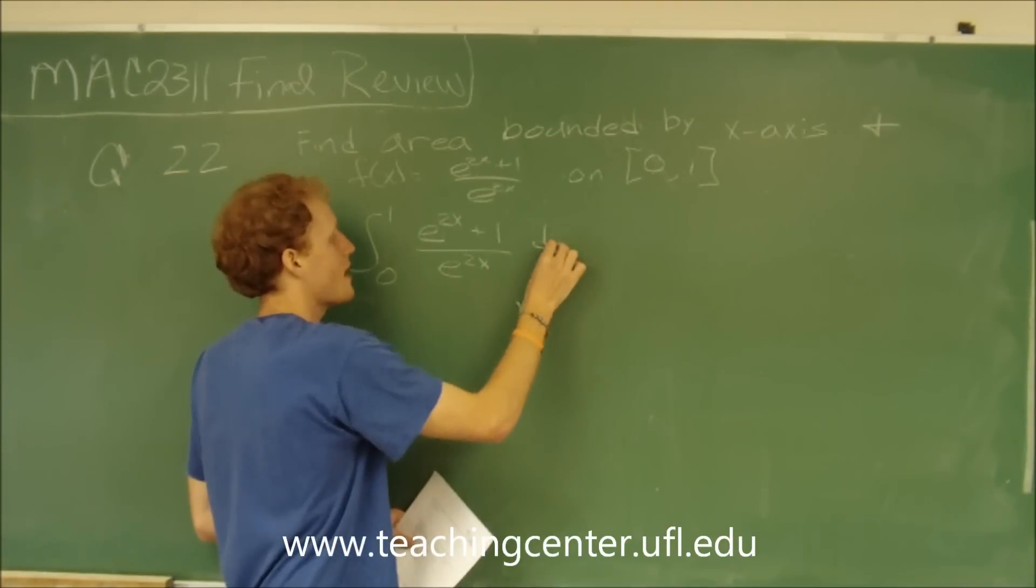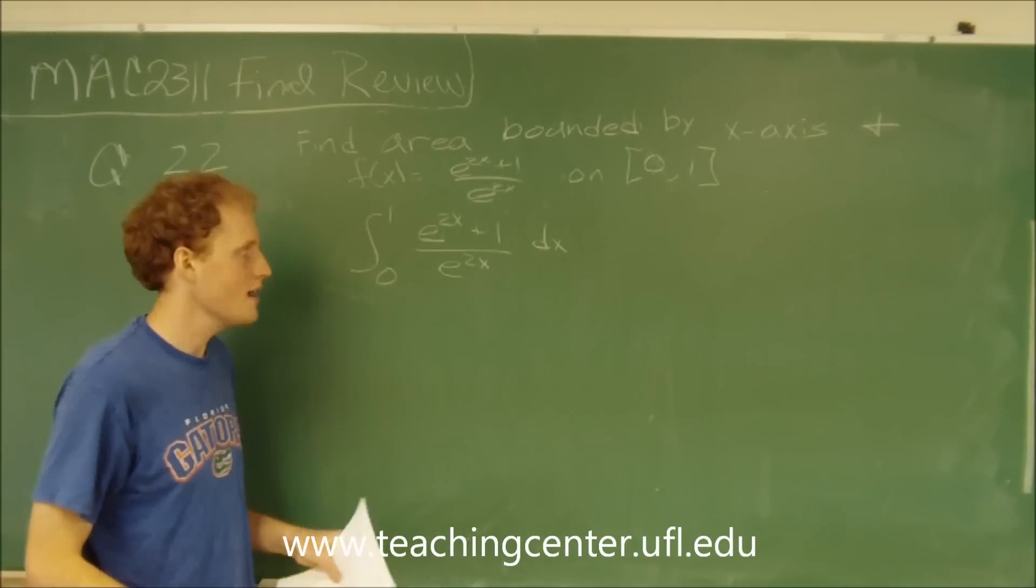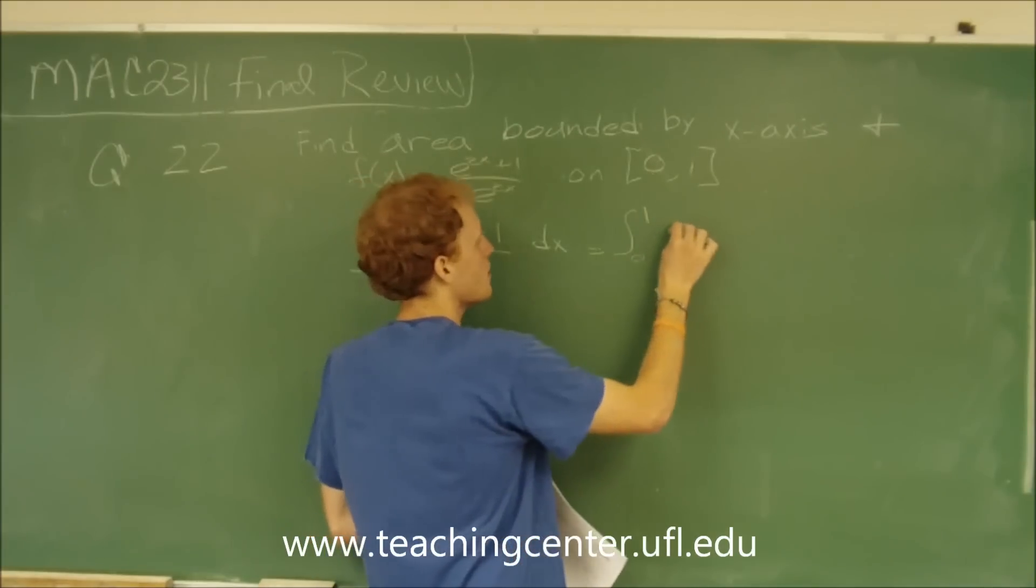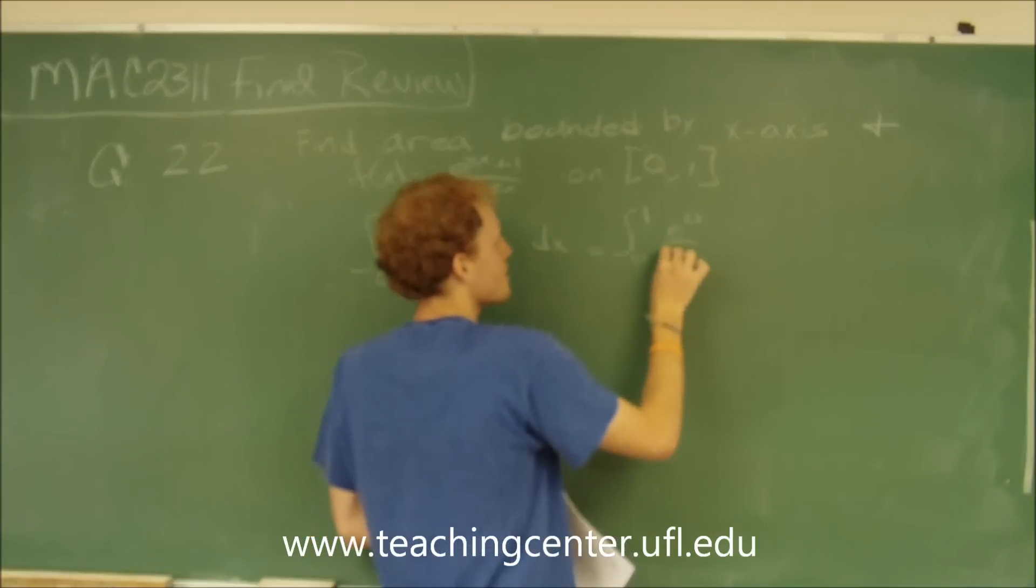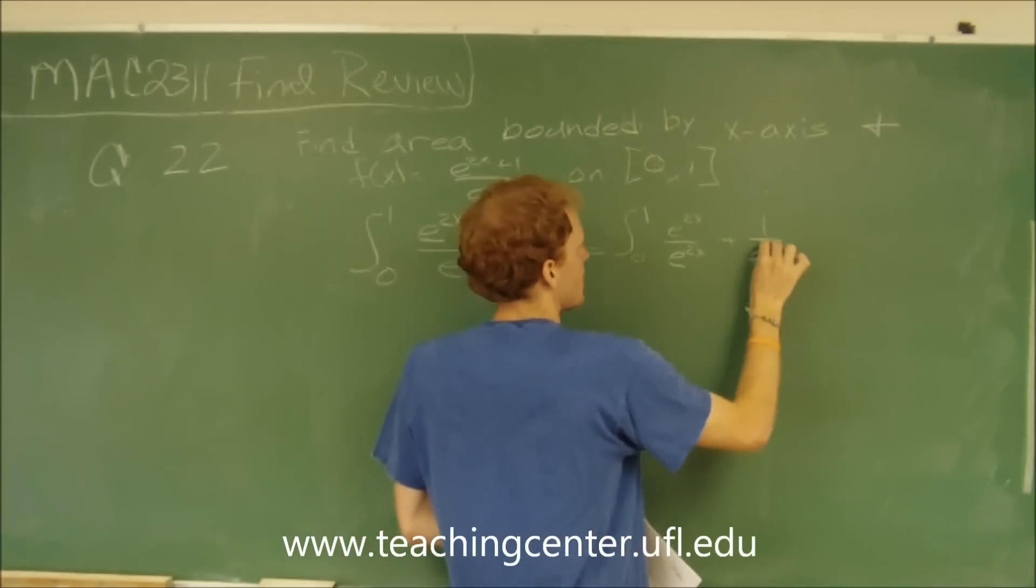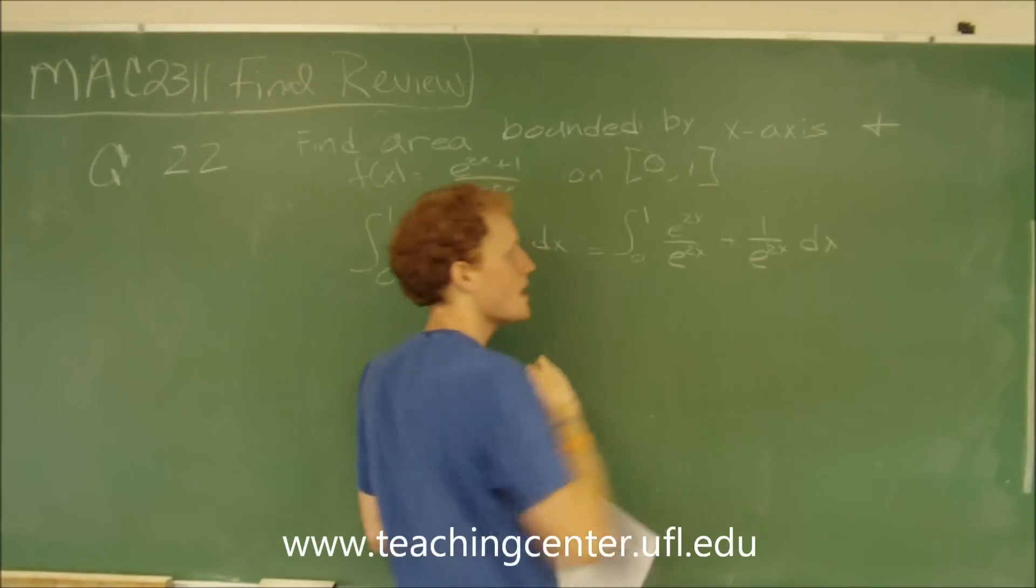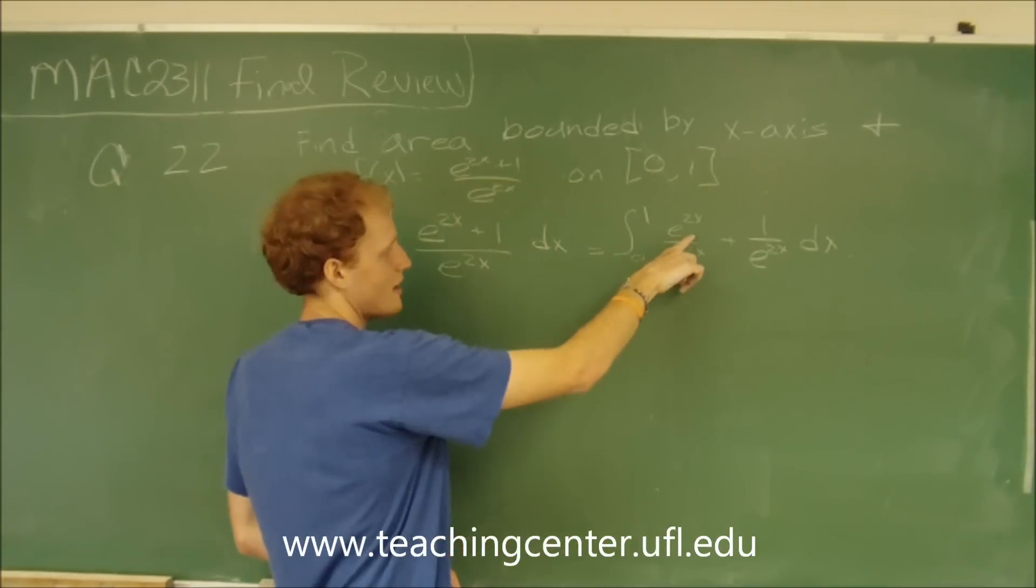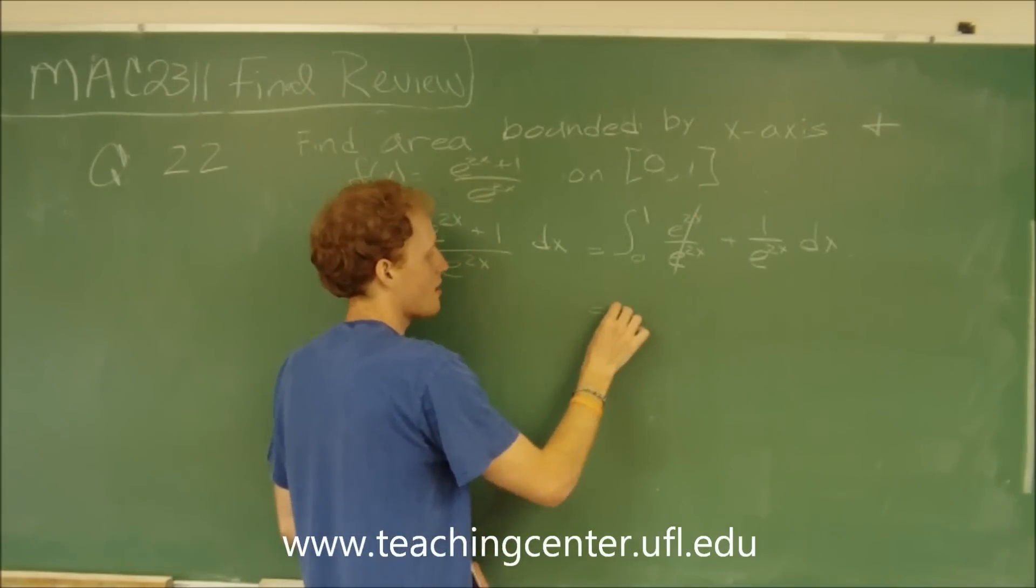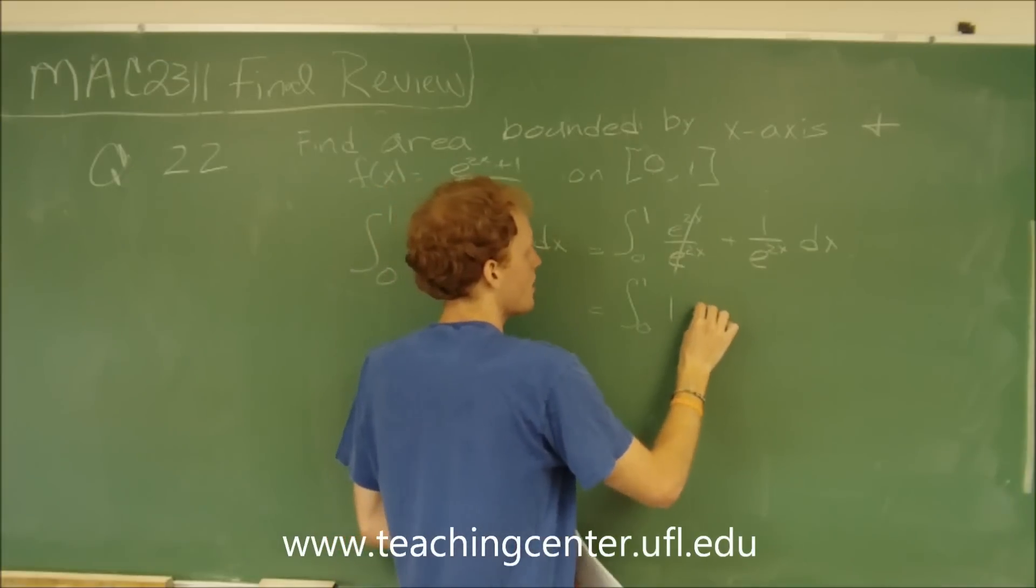We can simplify this integral a little bit by dividing it up. We can rewrite it as integral from 0 to 1 of e to the 2x over e to the 2x plus 1 all over e to the 2x. As we see, e to the 2x over e to the 2x cancel out and our integral will become 0 to 1 of 1 plus...